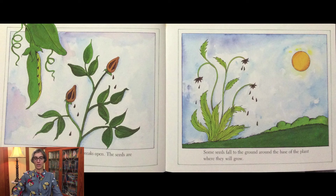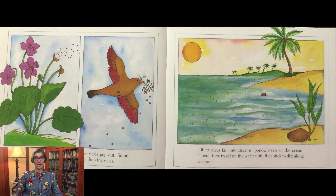Some seeds fall to the ground around the base of the plant where they will grow. Some pods or fruits open and the seeds pop out. Sometimes, when birds eat berries, they drop the seeds. Other seeds fall into streams, ponds, rivers, or the ocean, and travel on the water until they stick to dirt along a shore.